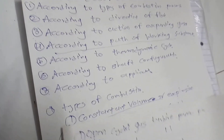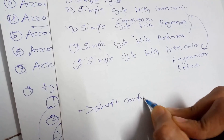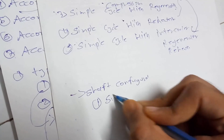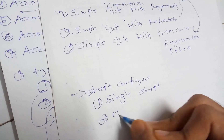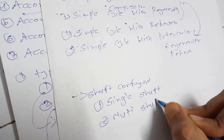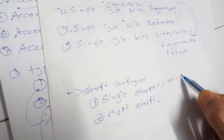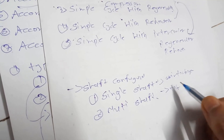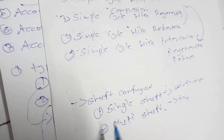The sixth classification is according to shaft configuration. There are two types: single shaft configuration and multi-shaft configuration. Examples of multi-shaft configurations include aircraft turbojet engines, which commonly use this arrangement.